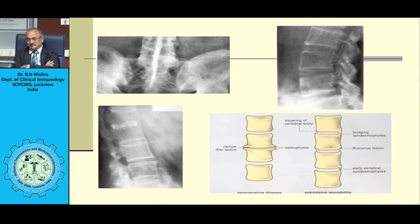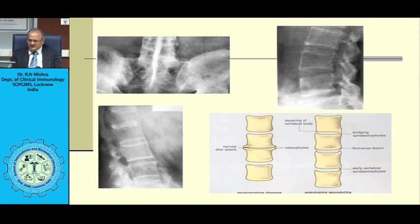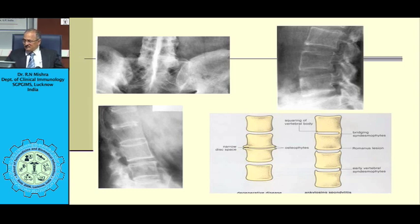X-rays of the sacroiliac joint can show sacroiliitis, but as we are gradually learning, sacroiliitis in ankylosing spondylitis is quite a late finding. An emerging investigation is MRI, which shows bone edema across the sacroiliac joint, and in many cases these progress to well-defined radiological changes.